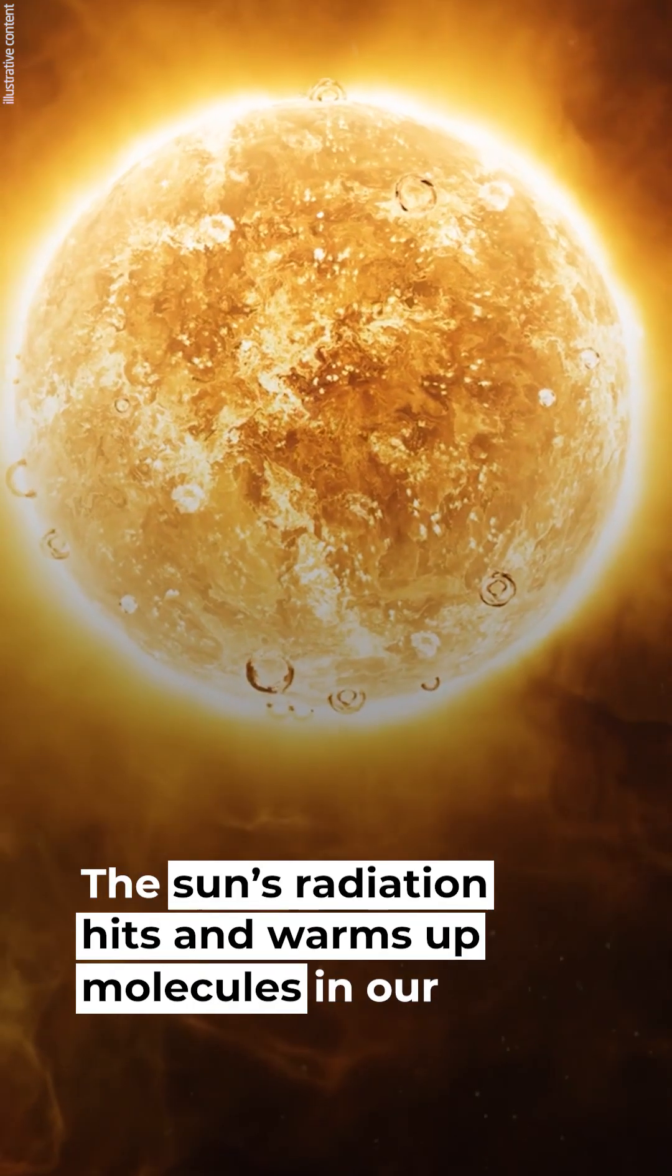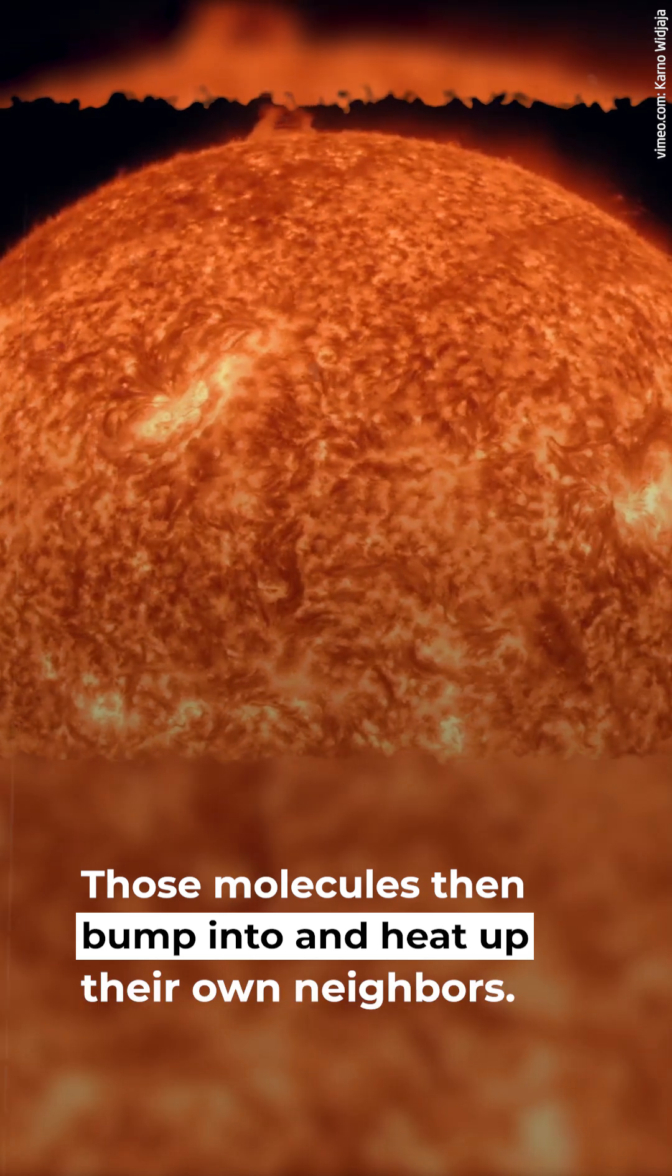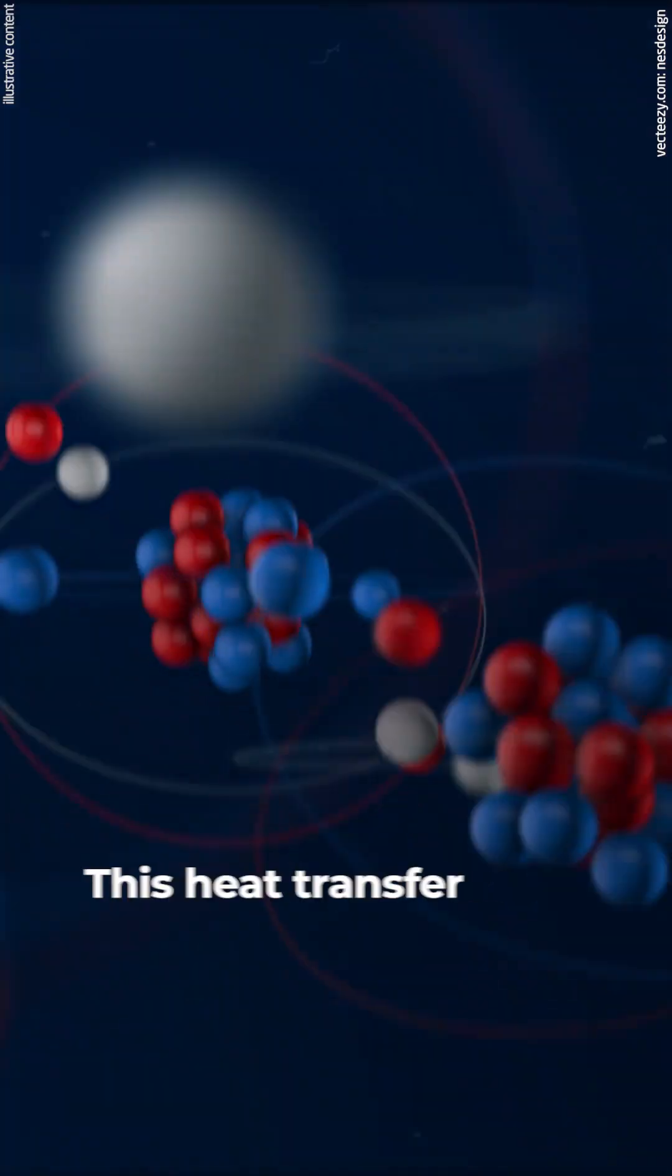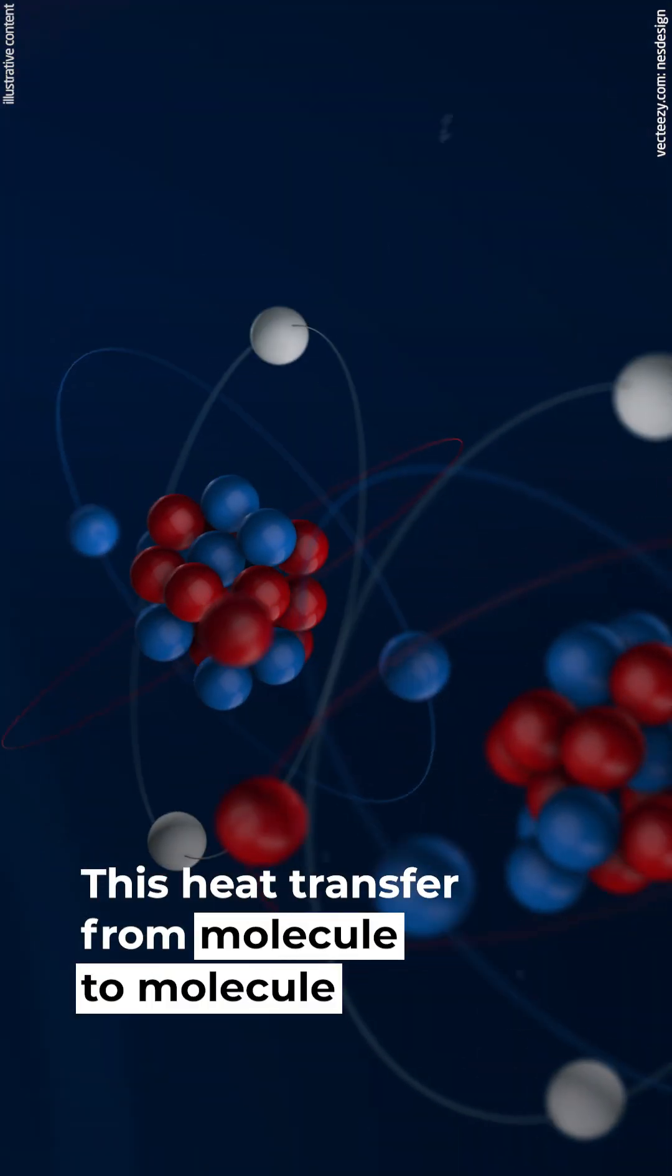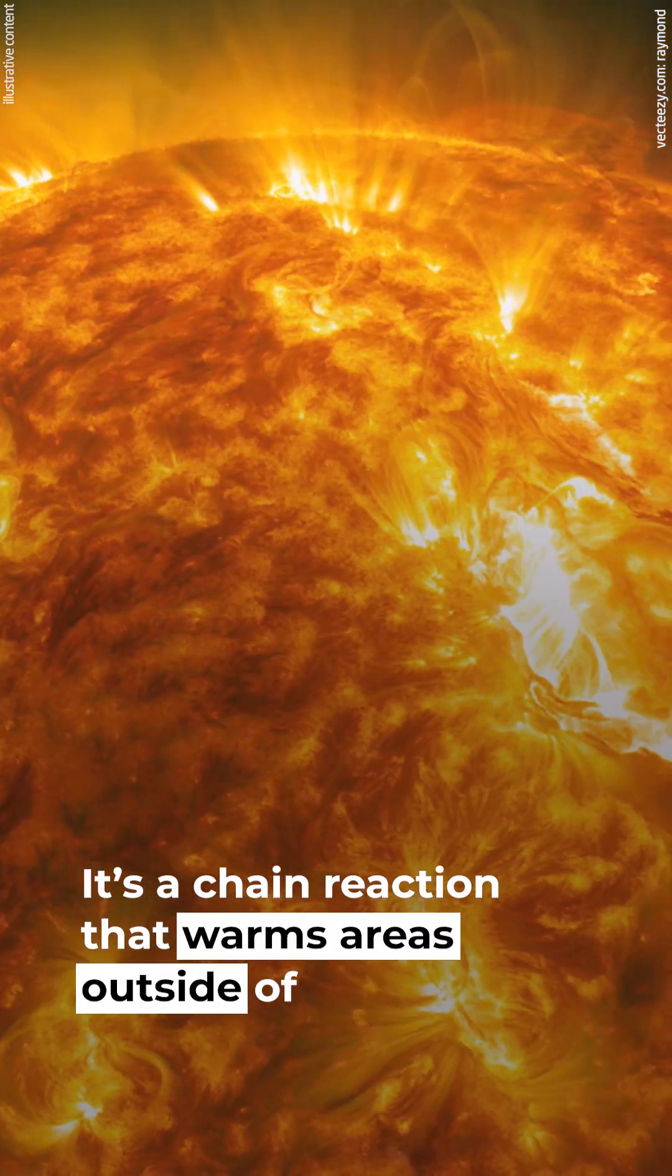The sun's radiation hits and warms up molecules in our atmosphere. They pass that extra energy to the molecules around them. Those molecules then bump into and heat up their own neighbors. This heat transfer from molecule to molecule is called conduction. It's a chain reaction that warms areas outside of the sun's path.